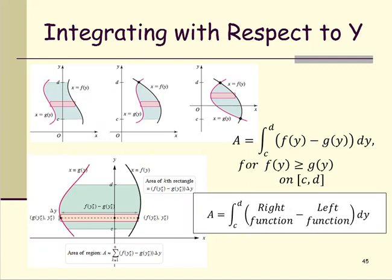When you see two graphs on the xy plane and you are asked to find the area between the curves, ask yourself: if you make a partition and move a rectangle along the region, is one function totally on the right side of the other? For this case, if you move this bar up and down in the y direction, one function is completely on the right and the other is totally on the left.